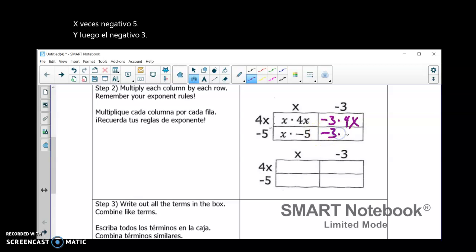So, as you see, every term gets multiplied together. So, when I multiply the 4x times x, I get 4x squared. Negative 3 times 4x gives me negative 12x.